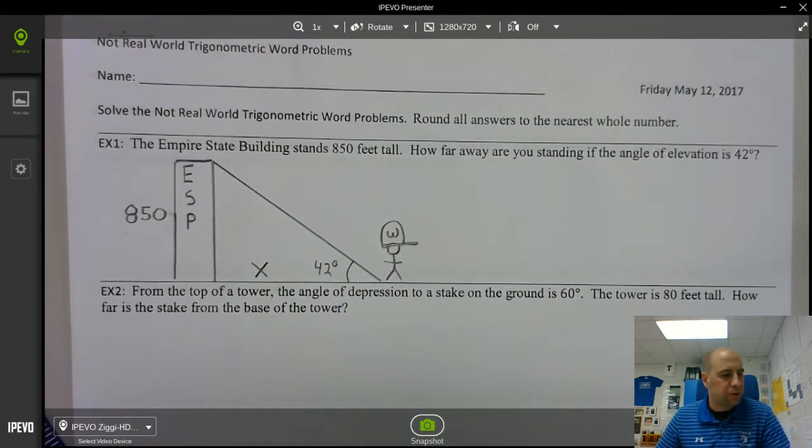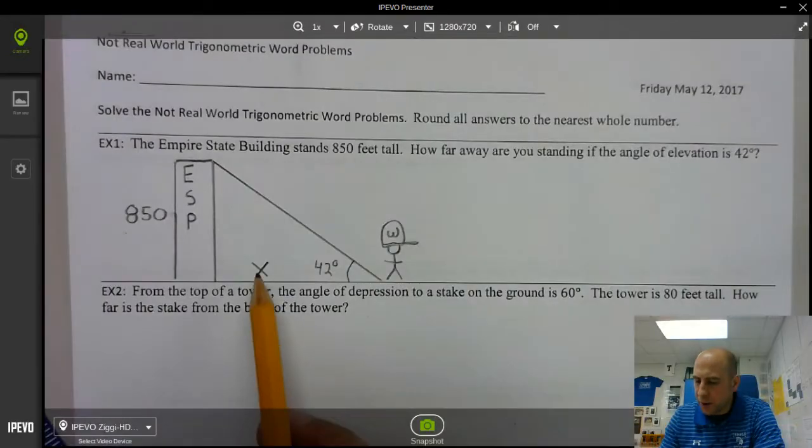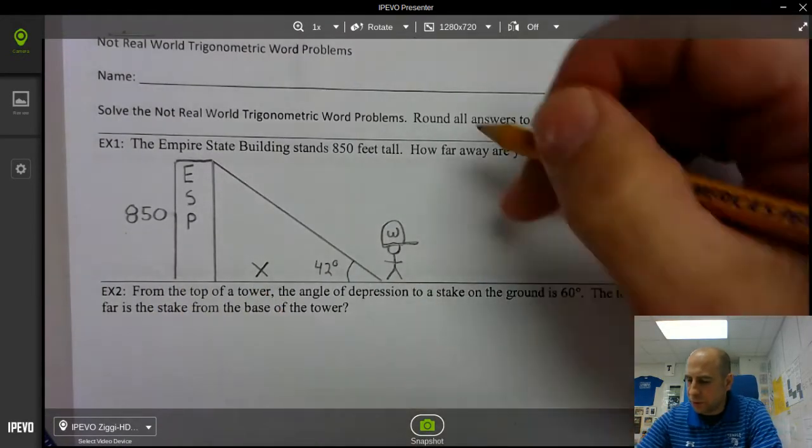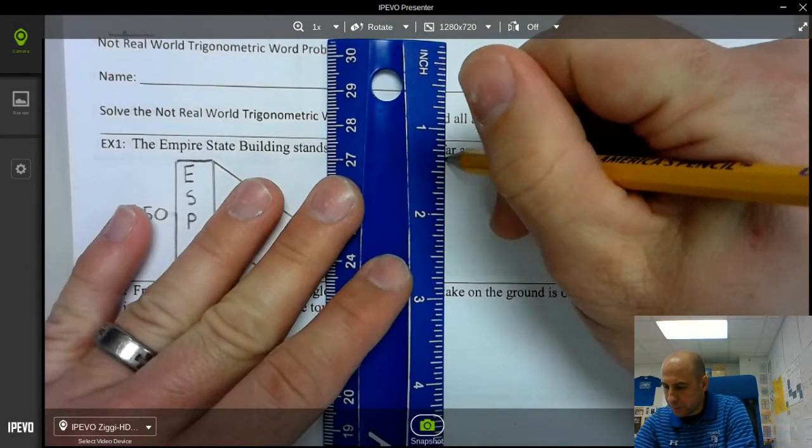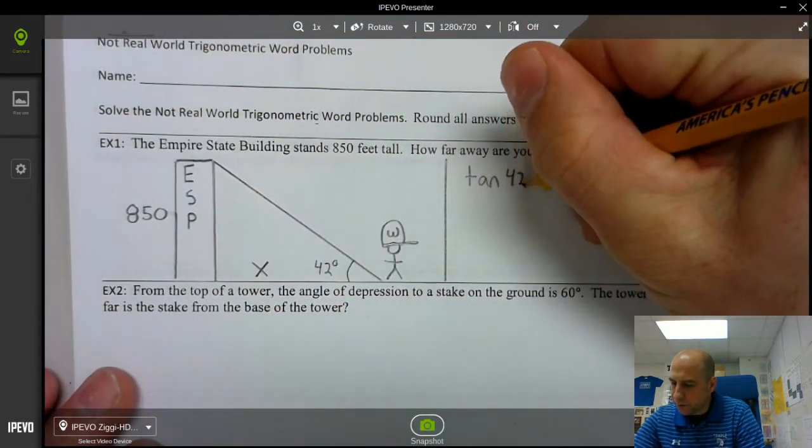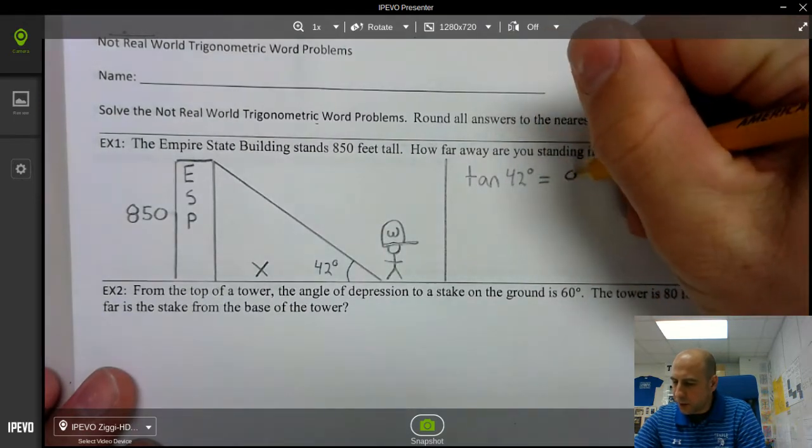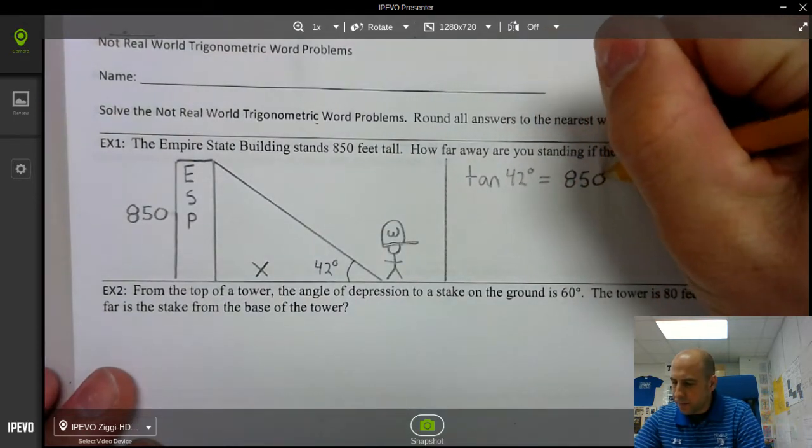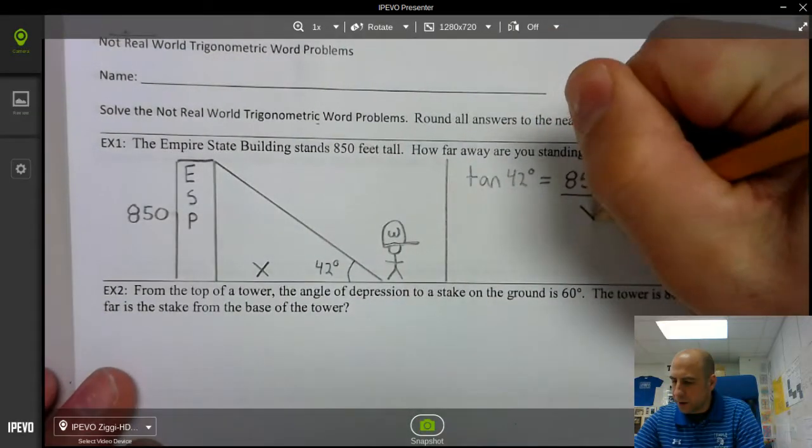Alright so step two choose the appropriate trig ratio. Well we have opposite over adjacent so we're going to use tangent. So tangent 42 degrees equals 850 divided by x.